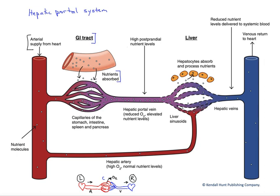The blood becomes partially deoxygenated and very nutrient-rich right after a meal, and it travels through the portal vessel known as the hepatic portal vein. That high nutrient level doesn't make it into the general systemic circulation because of this second capillary bed at the liver. We have liver sinusoids — very large, very permeable capillaries — that allow those nutrients to diffuse out. They are rapidly taken up by hepatocytes, the functional cells of the liver, to be stored.